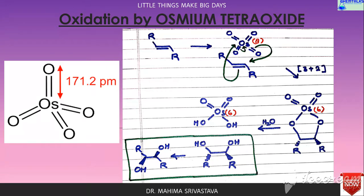The most common application of osmium tetraoxide is to convert alkenes to vicinal diols. This mechanism, described in the diagram, involves a concerted cis addition to form a cyclic osmate ester. This osmate ester then hydrolyzes to form the diol.